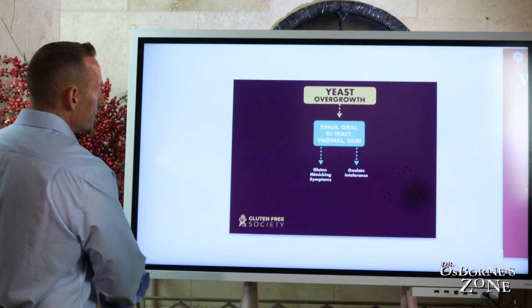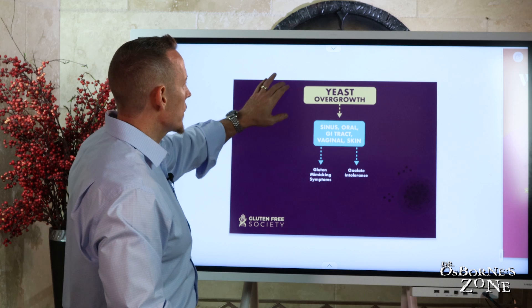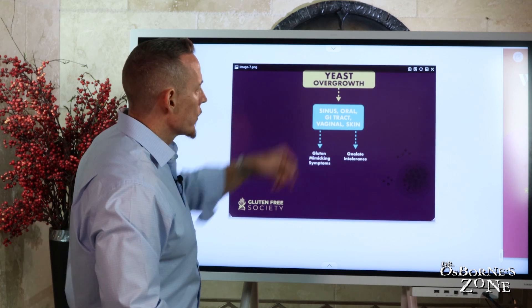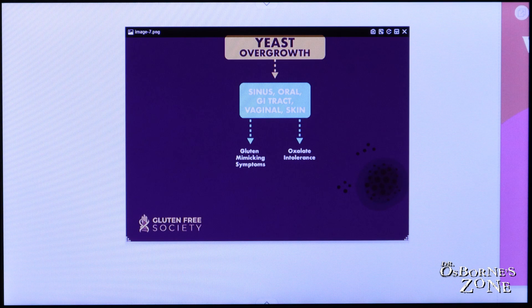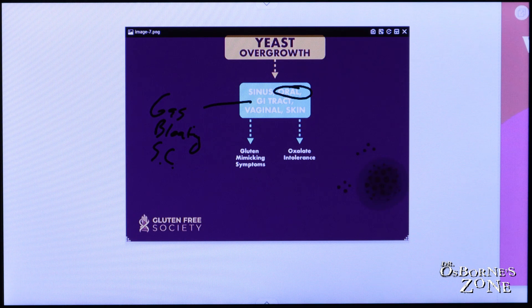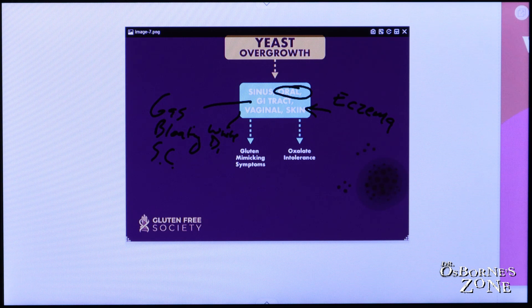Let's talk about where else yeast can manifest. Orally in the mouth — we saw a picture of that. The GI tract — again, the gas, the bloating, brain fog, sugar cravings, all those symptoms. Vaginally, you get a white discharge. And then skin as well. One of the ways yeast can manifest on the skin is it can look like eczema. So if you've got a history of eczema, that's something you should be aware of — it's a possibility that you have a yeast issue.